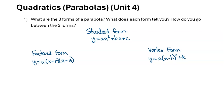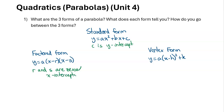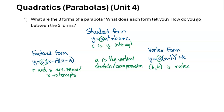What does each form tell you? In standard form, the c value is the y-intercept — the last term without an x. In factored form, the r and s values are the zeros, which are the x-intercepts. In vertex form, h and k give you the vertex. All three forms share the same a value, which is the vertical stretch or compression factor — it's the same across all three forms of a quadratic.